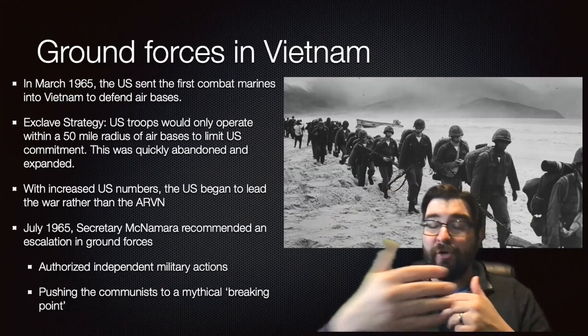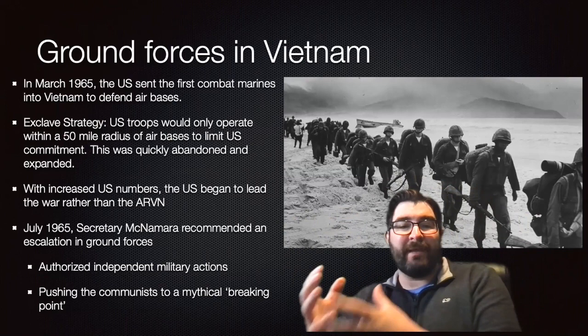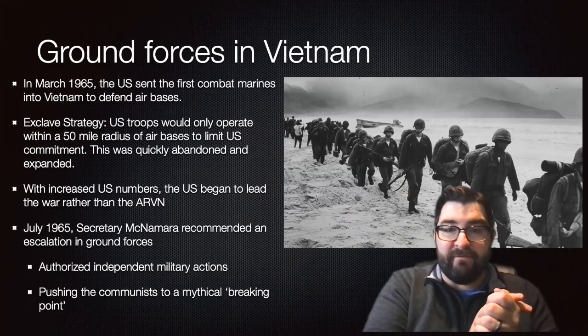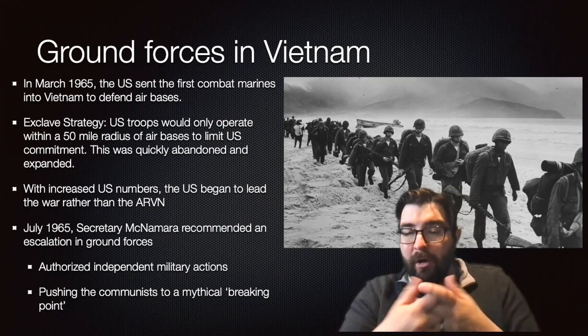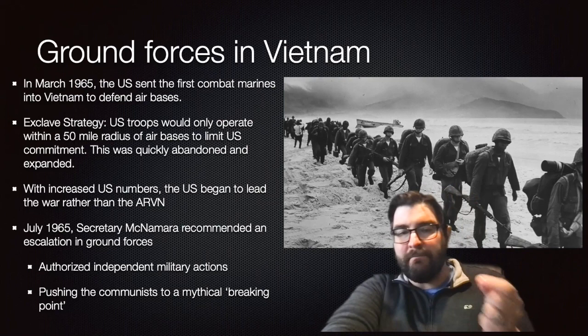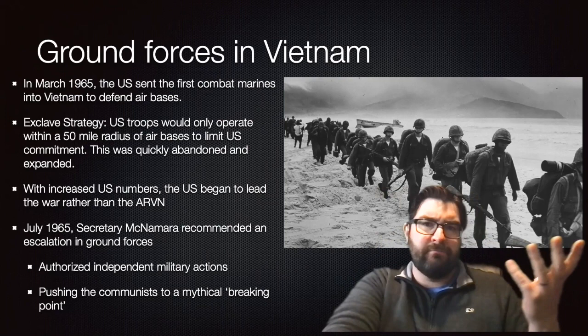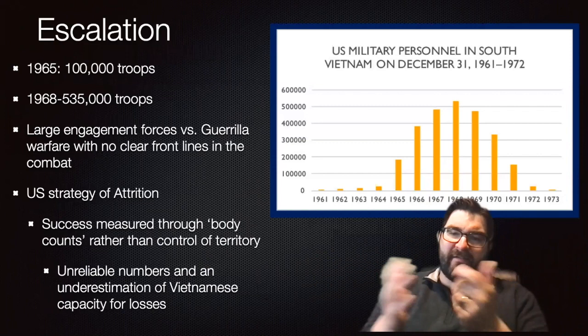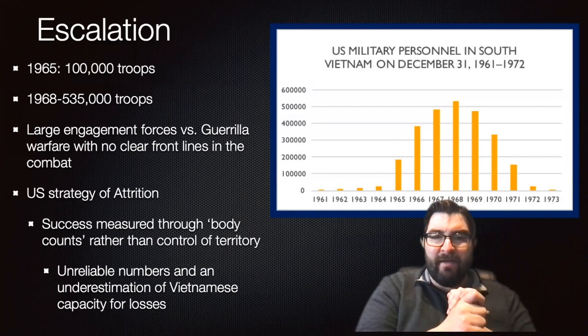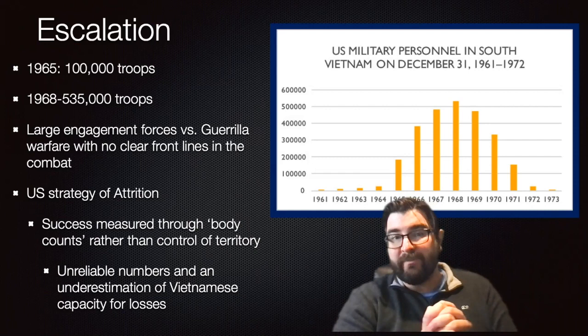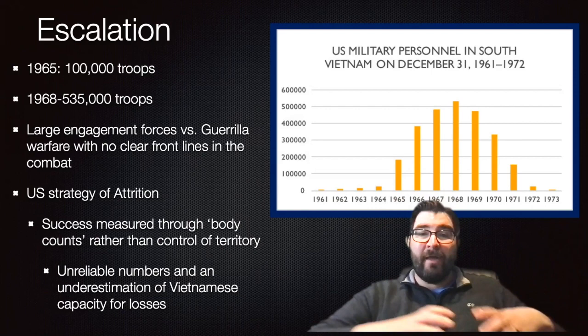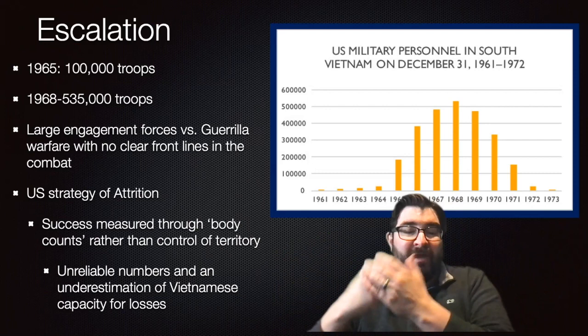With the U.S. increasing its numbers, the Americans began to take a heavier load in this war rather than the Army of the Republic of Vietnam. By July of 1965, with encouragement from Secretary of Defense Robert McNamara, the United States sent even more ground troops into Vietnam, and for the first time authorized independent military actions, with hopes of pushing communist forces to what ended up being a mythical breaking point. Troop levels escalated from about 100,000 at the beginning of 1965 to over 500,000 by the end of 1968 — large American forces battling a guerrilla army of Viet Cong fighters and North Vietnamese regulars, with no clear front lines in the combat.